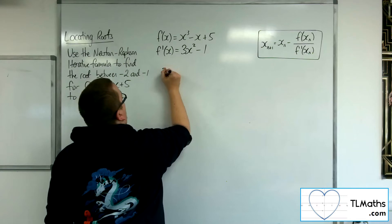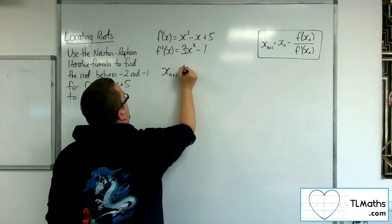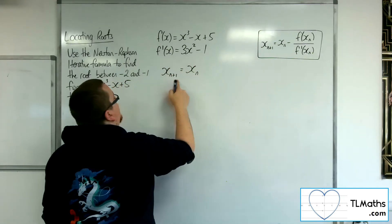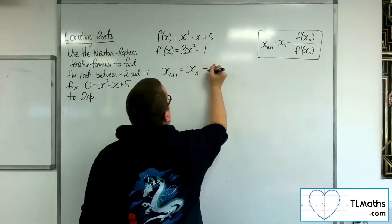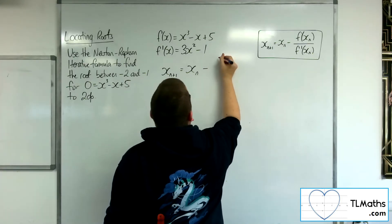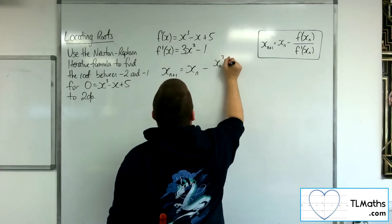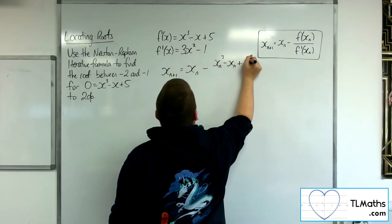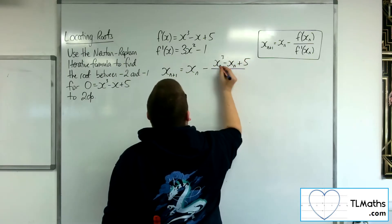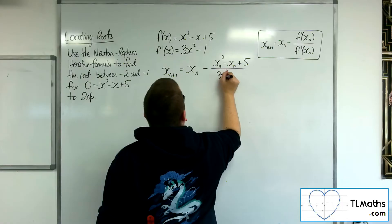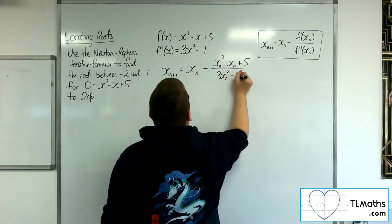The actual iterative formula that we're going to use is x_{n+1} = x_n - f(x_n)/f'(x_n), so x_{n+1} = x_n - (x_n³ - x_n + 5)/(3x_n² - 1).